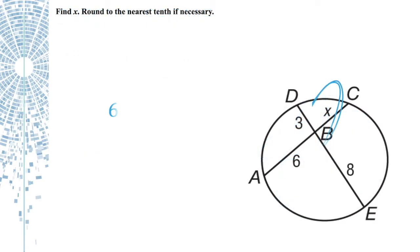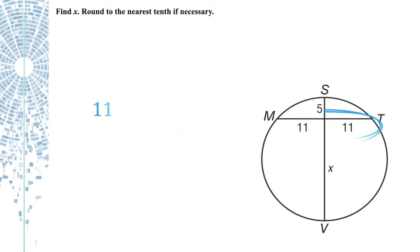So on this circle, we know that 6 times X equals 3 times 8. So 6X equals 24, and X equals 4. Same thing with this one: 11 times 11 equals 5 times X. 121 equals 5X, and X equals 24.2.